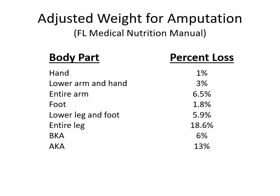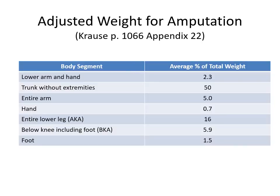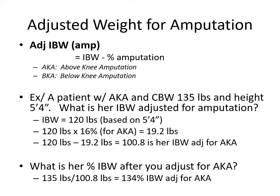There are also calculations for adjusting weight for amputations. The Florida diet manual and the textbook both list specific body part percent losses — the numbers are very similar but not identical, which is why it's important to cite your sources in your pocket guide. Key terminology: AKA = above knee amputation; BKA = below knee amputation. To adjust ideal body weight: IBW minus the percent amputation.